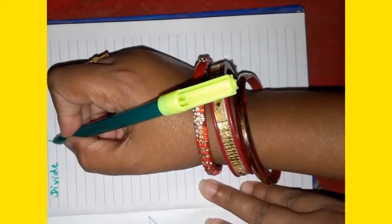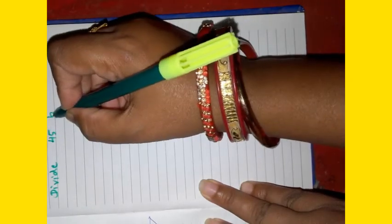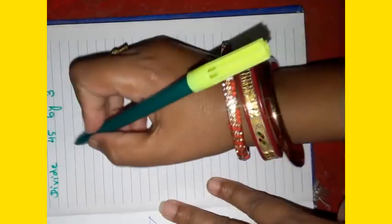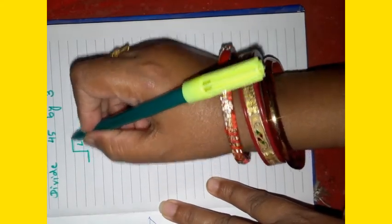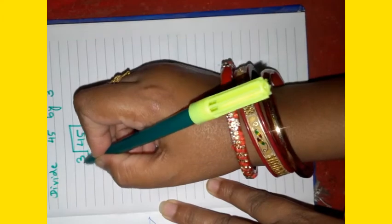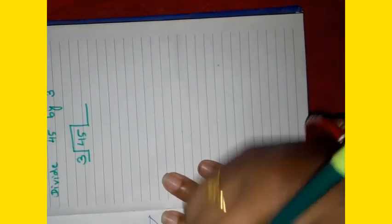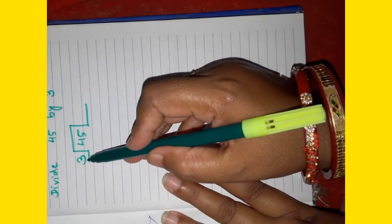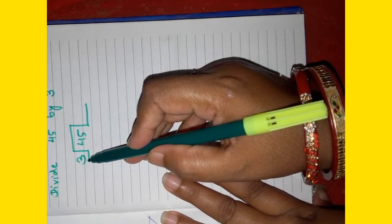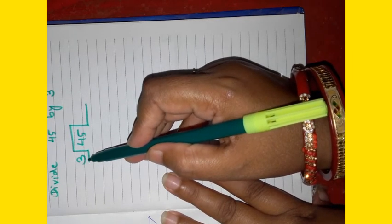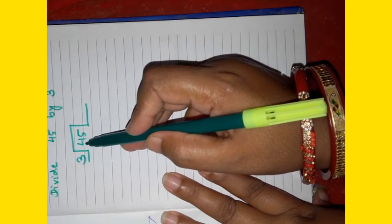Divide 45 by 3. Here 45 is the dividend and 3 is the divisor.